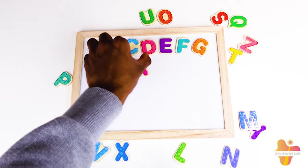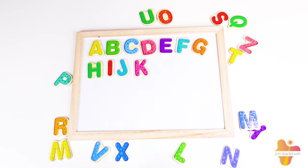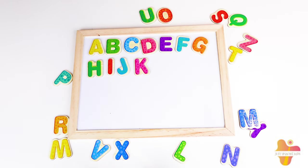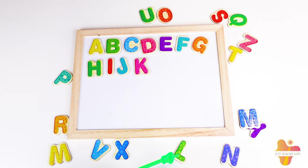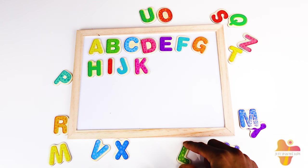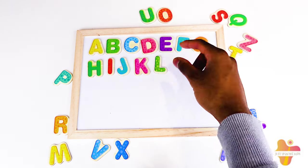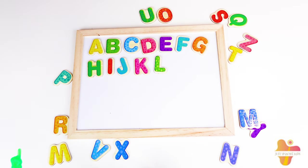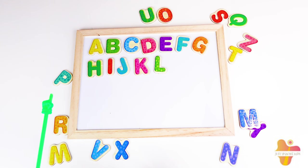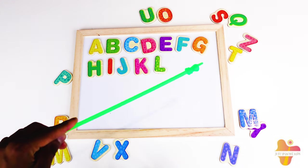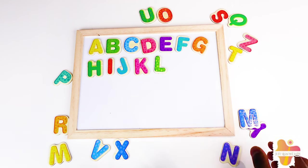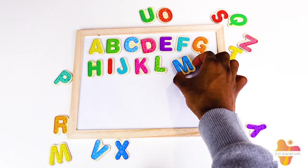Then I grab it and I put it here. So the next one we have is Big L. Where is Big L? Is this Big L? No. Oh, here is Big L! And the next one we can look for is Big M. Where is Big M? Oh, here is Big M! So I grab M and put it here.